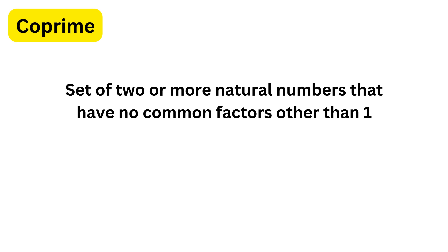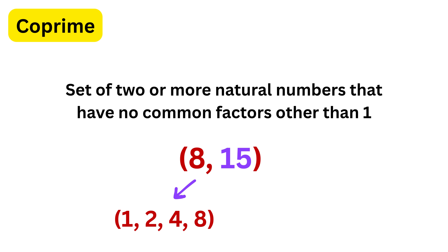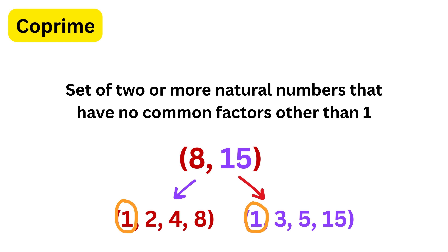Co-prime, also known as relatively prime numbers, are a set of two or more natural numbers that have no common factors other than one. For example, eight and fifteen are co-prime because the factors of eight are one, two, four, and eight, and the factors of fifteen are one, three, five, and fifteen — they have no common factors other than one. Note that two numbers can be co-prime without being prime.